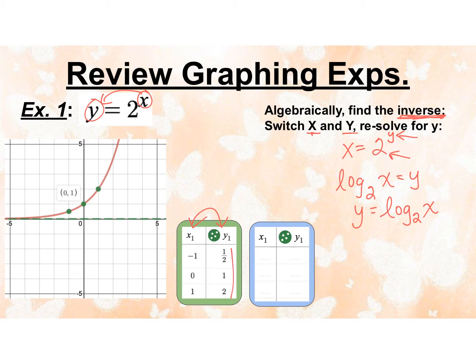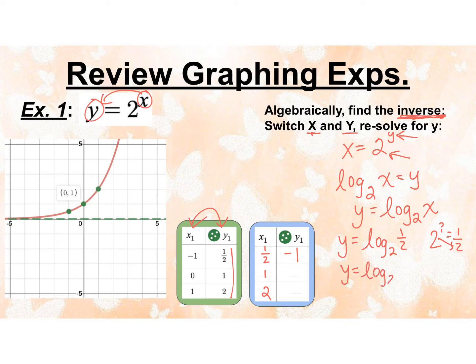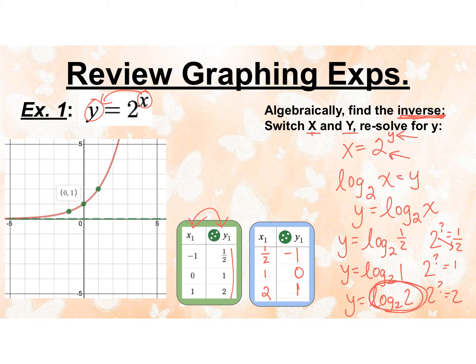My x values are now going to be 1 half, 1, and 2. For y equals log base 2 of 1 half, I'm thinking: 2 to the what is 1 half? To get the 2 in the denominator it must be negative, so negative 1. For y equals log base 2 of 1: 2 to the what is 1? That's 0. For y equals log base 2 of 2: 2 to the what is 2? That's 1. We'll see this a lot — log base 3 of 3, log base 4 of 4 — they're all 1. Whenever you have the same base and the same number, the answer is 1.